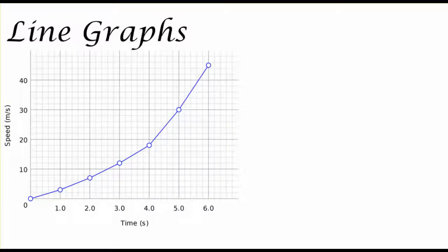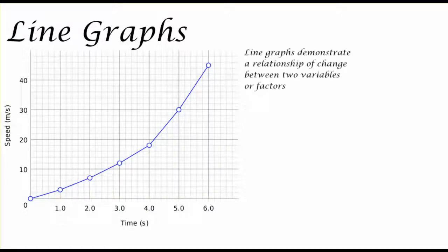Moving forward to line graphs, we're able to instead take a look at how information changes over time. That is, line graphs demonstrate a relationship of change between two variables or factors. In most cases, we are thinking about time. As time moves from left to right on the x-axis in this case, we're able to see how speed changes in meters per second on the y-axis.